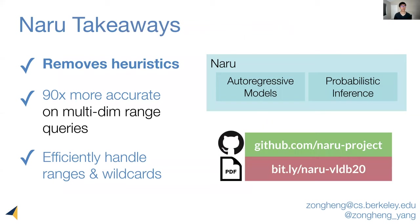To summarize, we have presented Naru, which is a single-table cardinality estimator that fully removes heuristics. As a result, it is much more accurate than prior state-of-the-art. We also propose optimizations to efficiently handle range queries and wildcards. We have open-sourced Naru on GitHub. Please check it out. Thanks for listening.